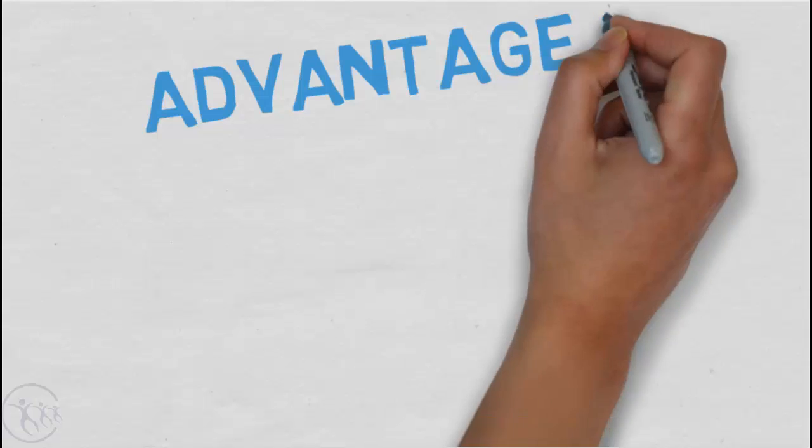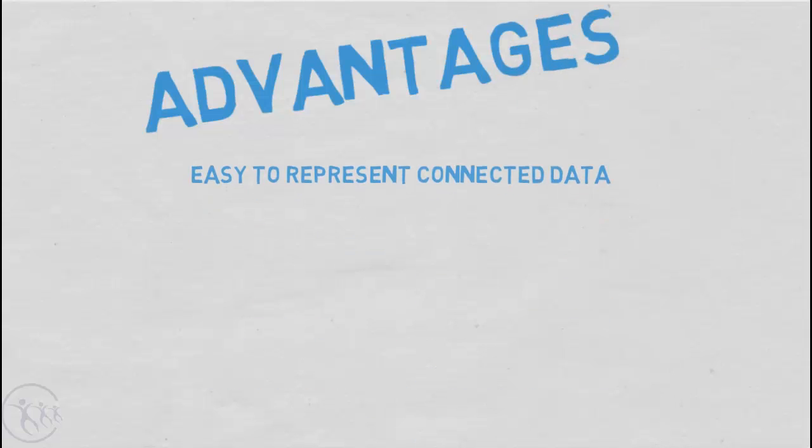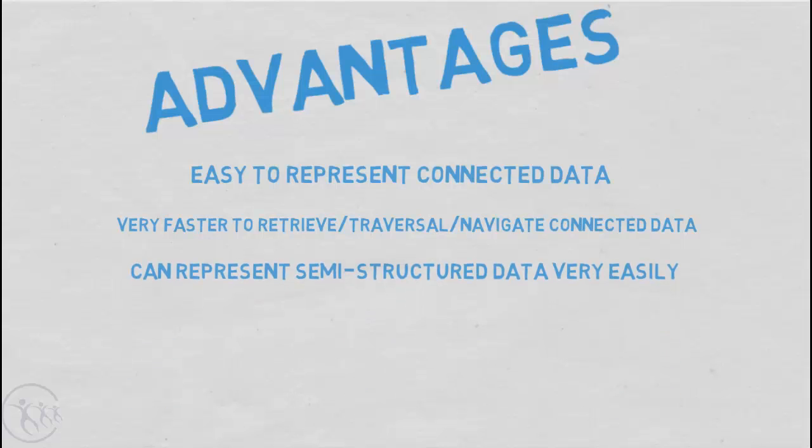So what are some of the advantages of graph databases such as Neo4j? Well, they make it easy to represent connected data. What do I mean by that? They make it both easy and fast to traverse or navigate large amounts of data that has some sort of relationship. Data that doesn't fall into a natural structure can be easily represented in a graph database.